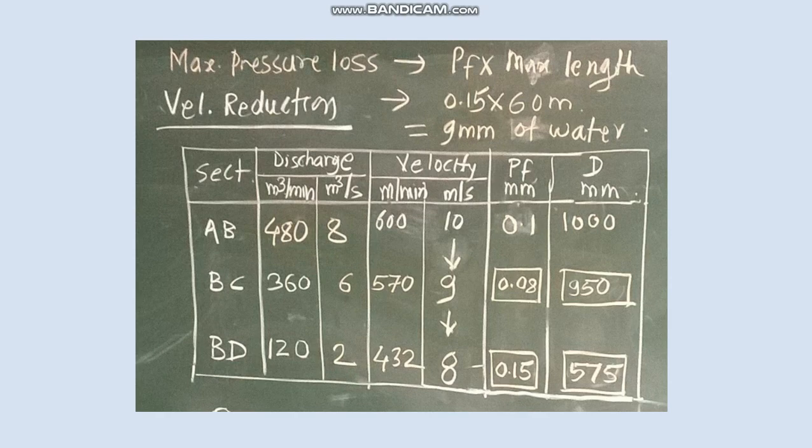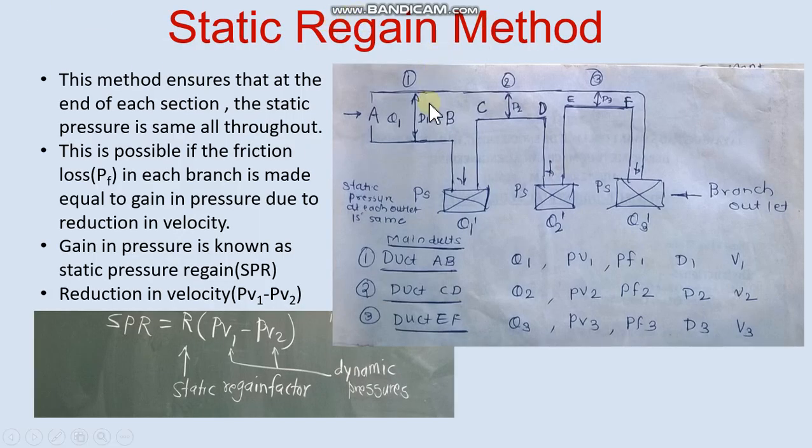The third method is static regain method. This method ensures that at the end of each section the static pressure is same. So PS, static pressure, is same. So how it is possible? It is possible if the friction loss, that is PF in each branch, is made equal to gain in pressure.